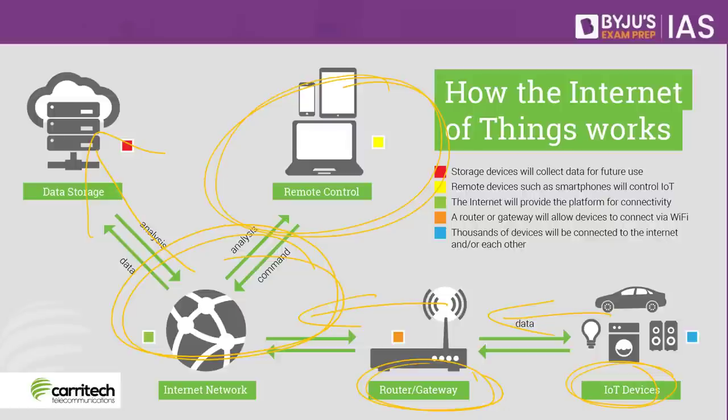For example, a smartwatch tied on your hand requires no human intervention — it tracks the number of steps you walk on its own. All you require is a smartphone and a smartwatch. There is minimal human intervention, but it is able to store data. You have Internet as a platform, IoT devices exchanging data, storing it on the cloud, and retrieving it when needed — simplifying the lives of people.